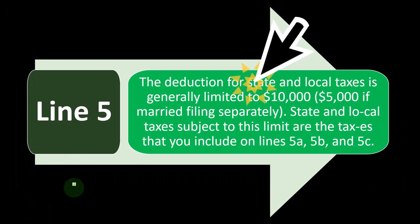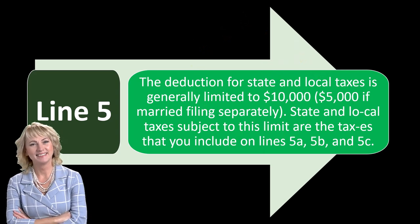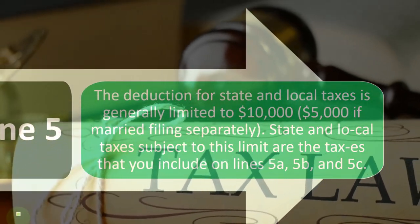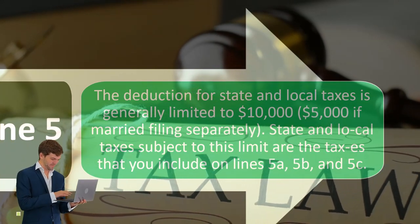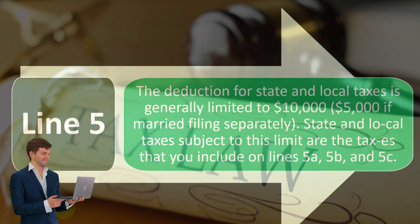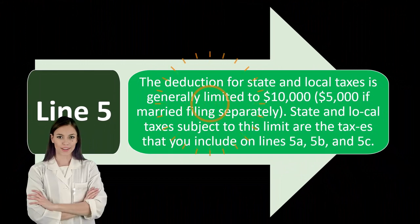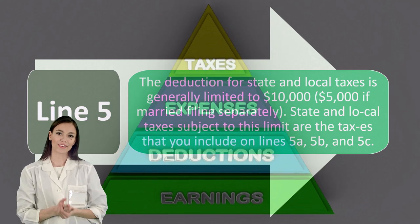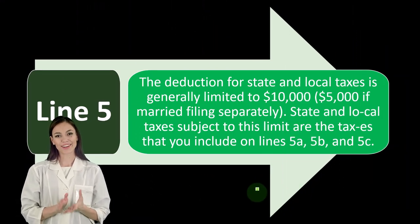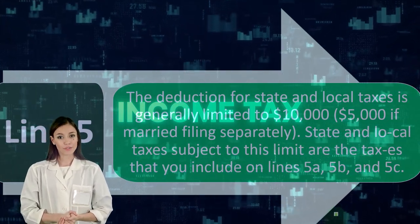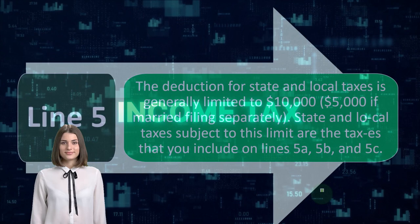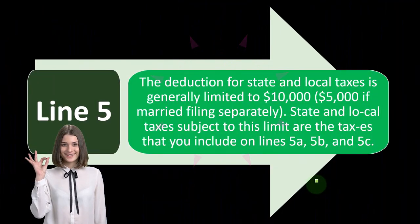On line 5, the deduction for state and local taxes is generally limited to $10,000 — or $5,000 if married filing separately. This law was passed a few years ago and caused a lot of debate. When deducting state taxes, there's a difference between high-cost-of-living states and low-cost-of-living states. Being able to deduct those taxes tends to subsidize high-cost states like California and New York, which have high income taxes. The cap tends to hurt wealthier individuals in higher-income states more.